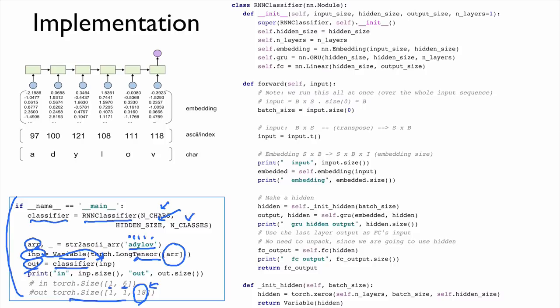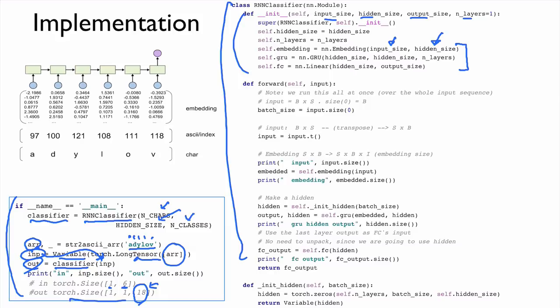Let's look at our RNN class. In the initialization, we get hyperparameters and define three layers. The first is an embedding layer with input size and hidden size, where hidden size is the input size for the RNN. For the RNN we use a GRU, defining input size and output size — both equal to hidden size. On top of that, we connect a fully connected linear layer, where hidden size is the input and 18 is the output size for the 18 countries.